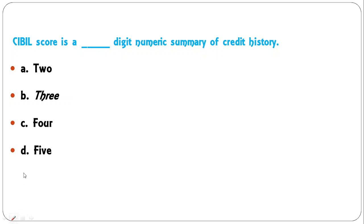The CIBIL score is a how-many-digit numeric summary of credit history: 2 digit, 3 digit, 4 digit, or 5 digit? It is a 3-digit numeric summary of an individual's credit history, so B is the correct answer.